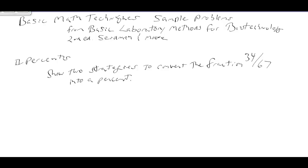The question at the top of page 234 says: show two strategies to convert the fraction 34/67 into a percent. The first strategy is a proportional approach: 34/67 equals x/100, because we want to take this to 100 when doing percentages.